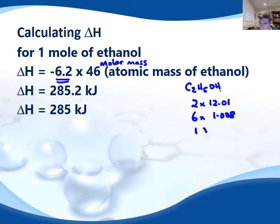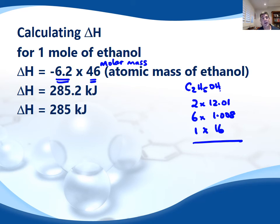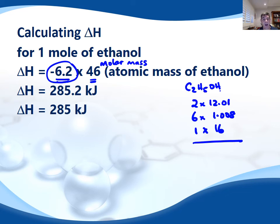And then 1 oxygen at 16. Rounded up, the molar mass of ethanol is 46 g/mol. You'll keep the full number in your calculator for these calculations, but when we multiply 6.2 by 46, we get a value of 285.2 kilojoules per mole.